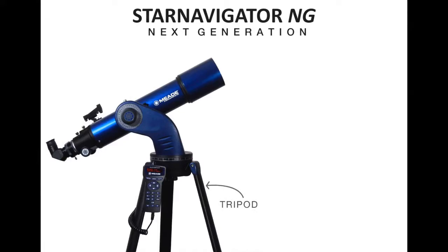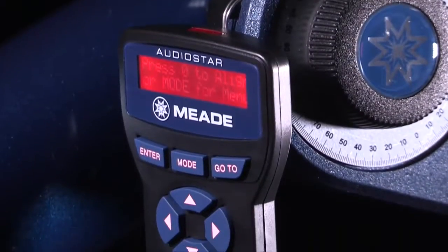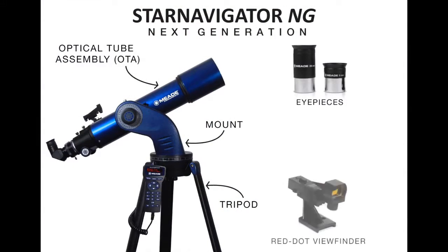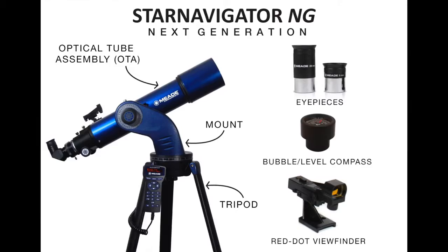The Star Navigator NG series comes with a sturdy tripod, OTA and single arm mount, and AudioStar handbox. These telescopes also come with accessories including two 1.25 inch eyepieces, a red dot viewfinder, and a bubble level compass.